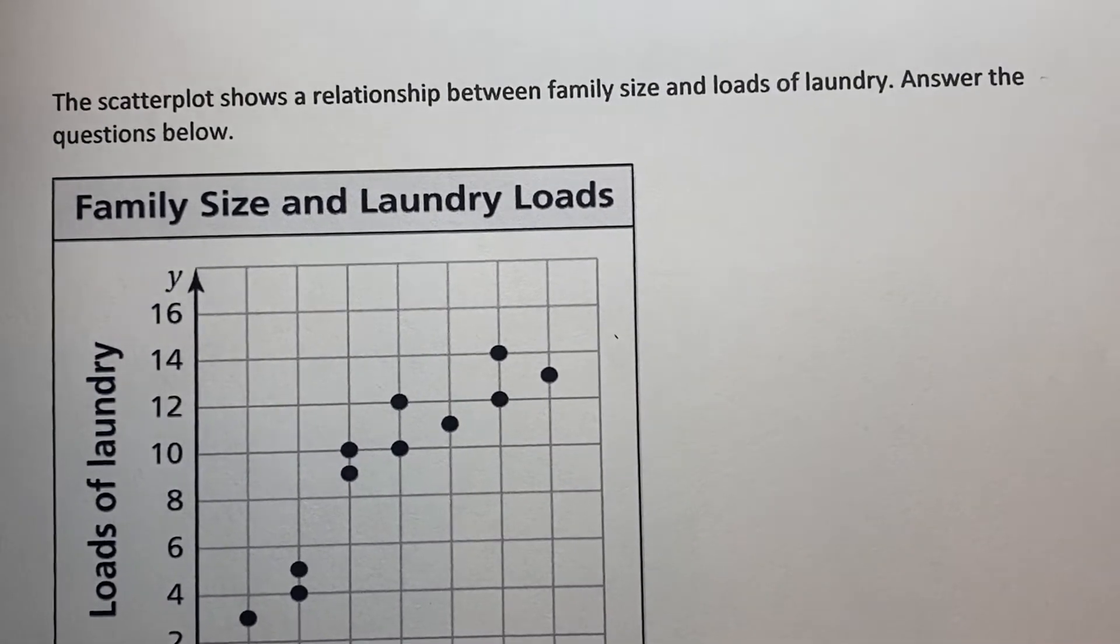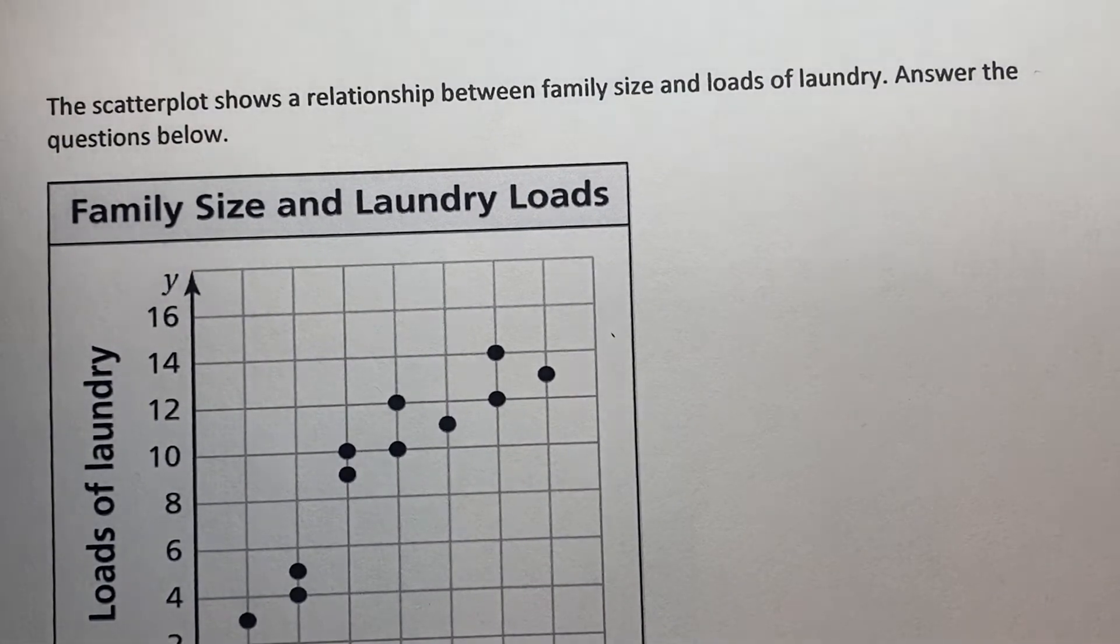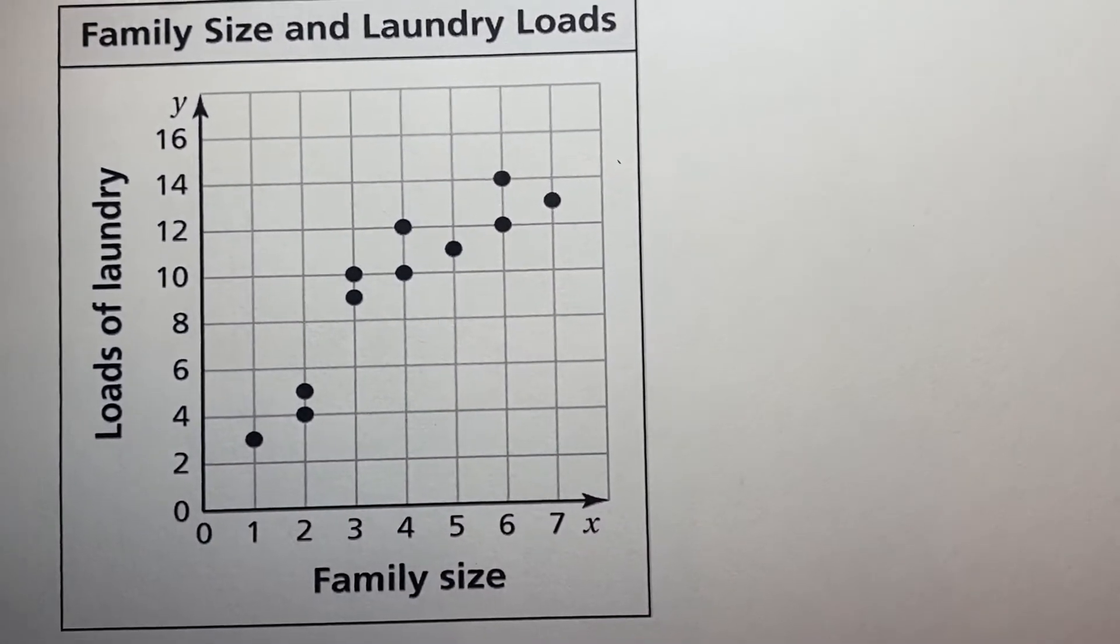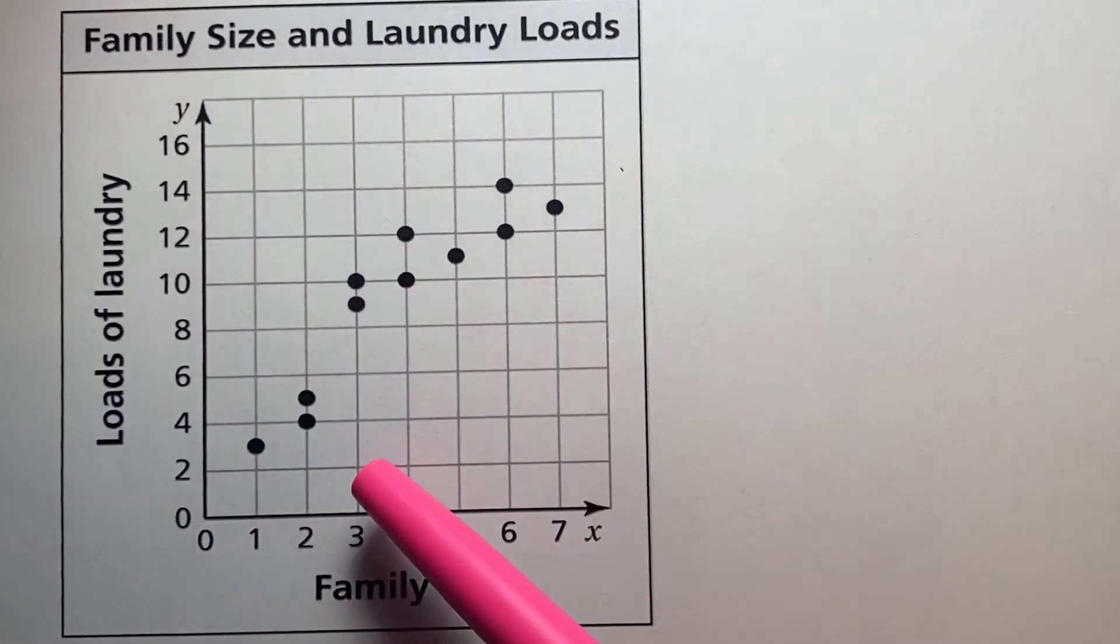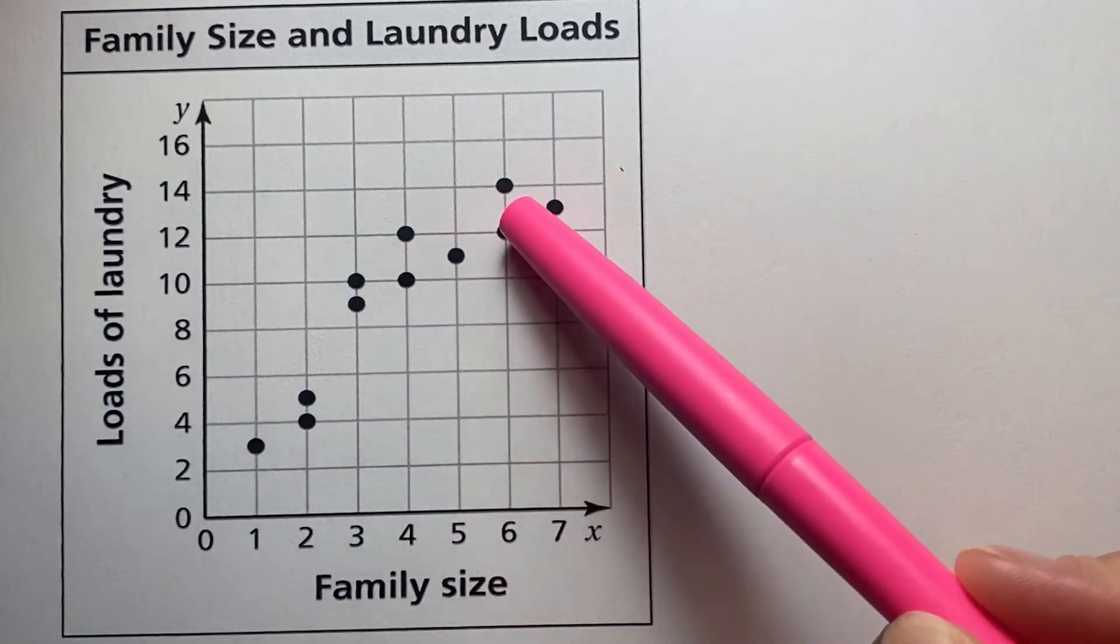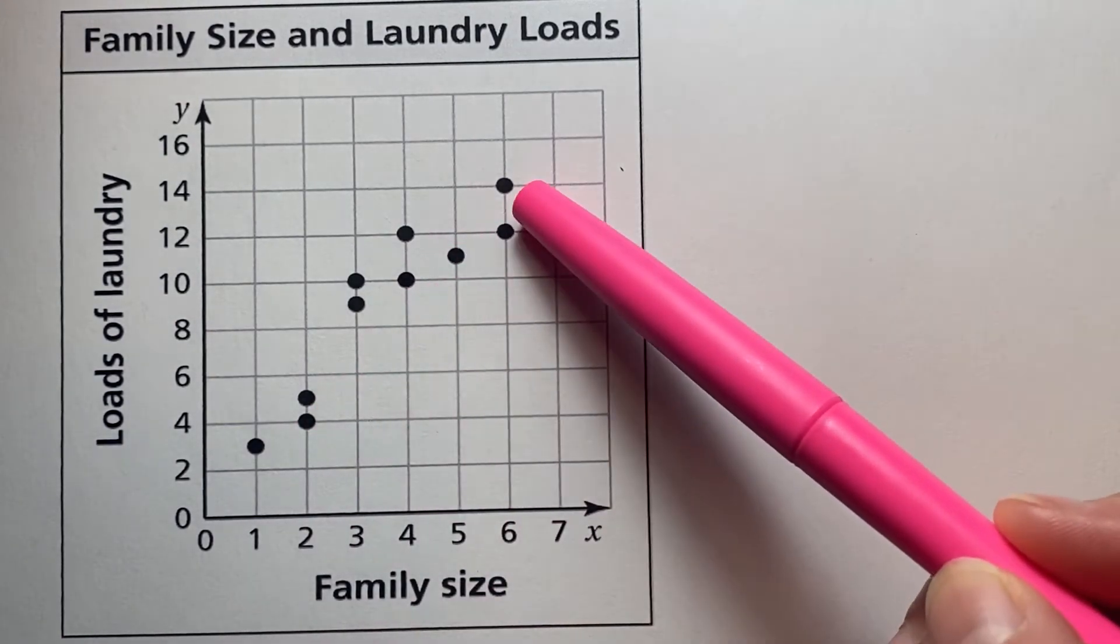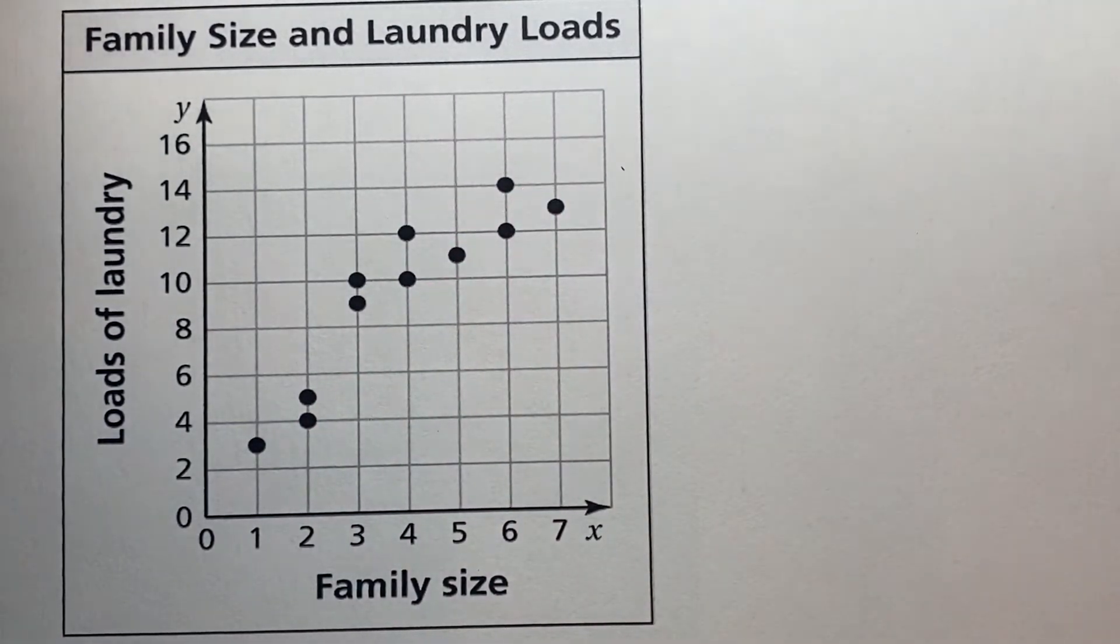Before we answer the questions, let's go ahead and take a look at the graph and the data, the way it's plotted, and identify that as my x values are increasing, my y values are also increasing. So I want to go ahead and see that this is going up, so this would indicate a positive correlation.